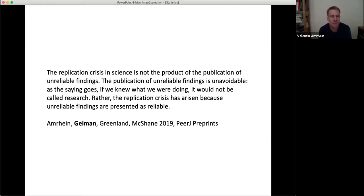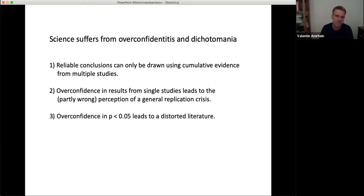So this was a paper that we wrote in reaction to some criticism to our Nature commentary, and I put Andrew Gelman here because this is a classic Andrew Gelman sentence, and it's actually him who provided this for our paper. But this is exactly how I feel as well. The replication crisis has arisen because unreliable findings are presented as reliable. So I'd say a large part of the replicability crisis is due to wrong communication, because we all learned to make a strong statement based on single papers. This is actually a first summary. So science suffers from overconfidentitis and dichotomania. Reliable conclusions can only be drawn using cumulative evidence from multiple studies, and overconfidence in results from single studies leads to the partly wrong perception of a general replication crisis.